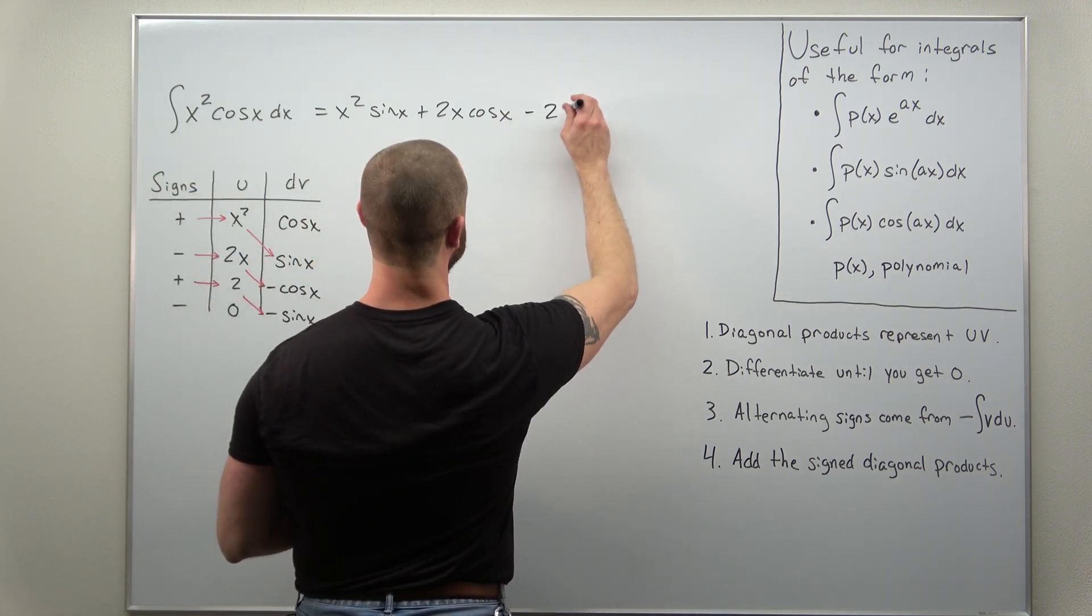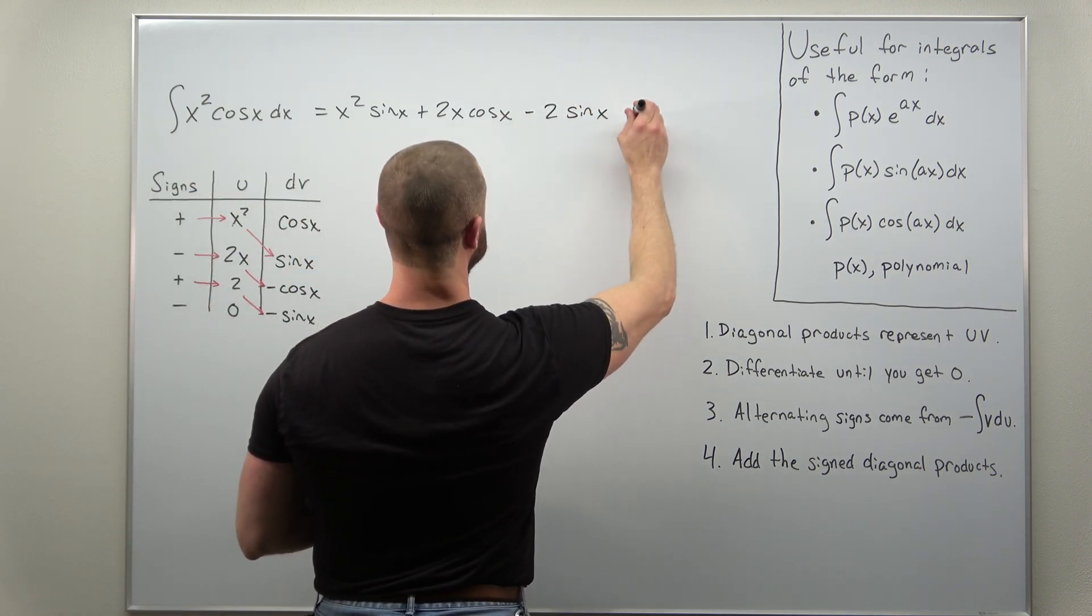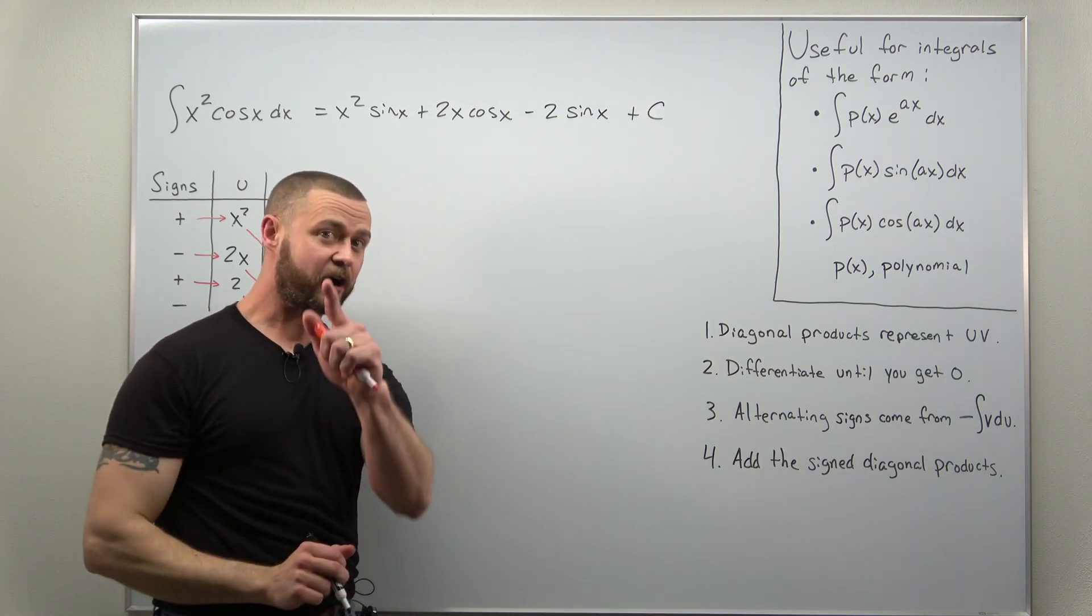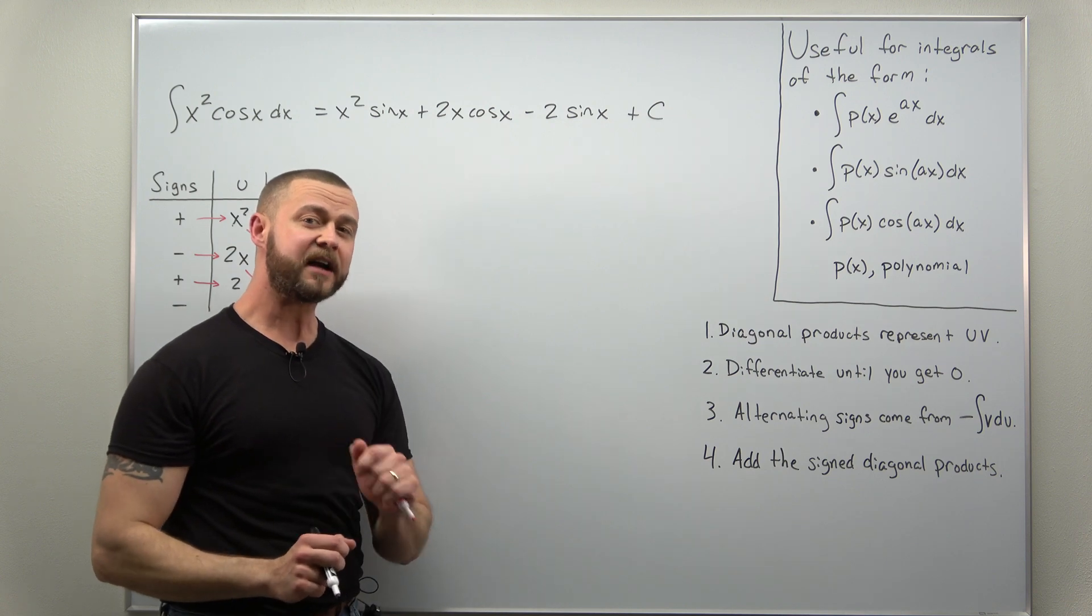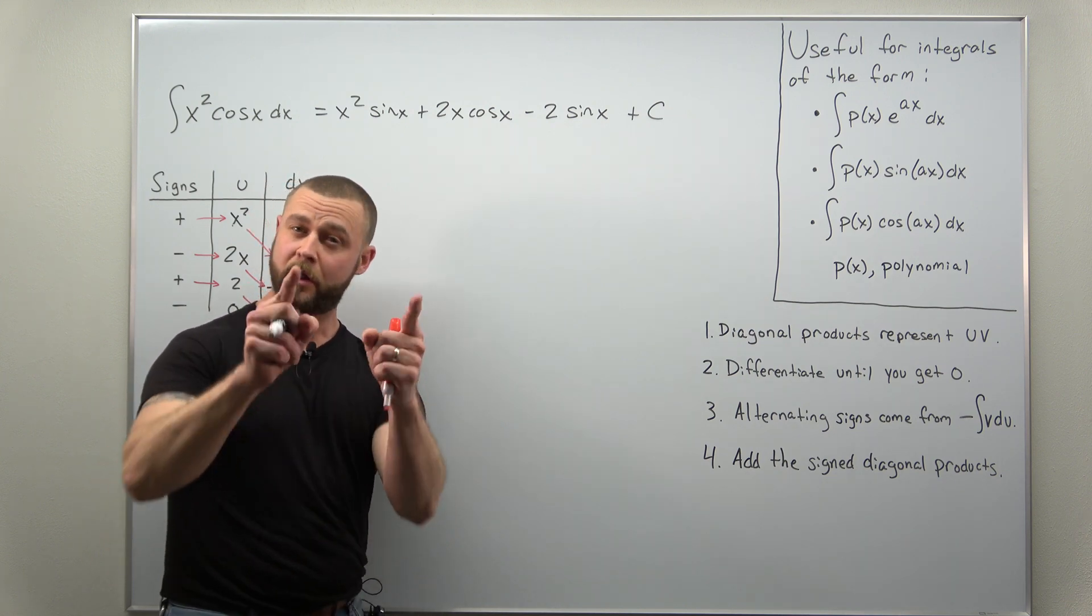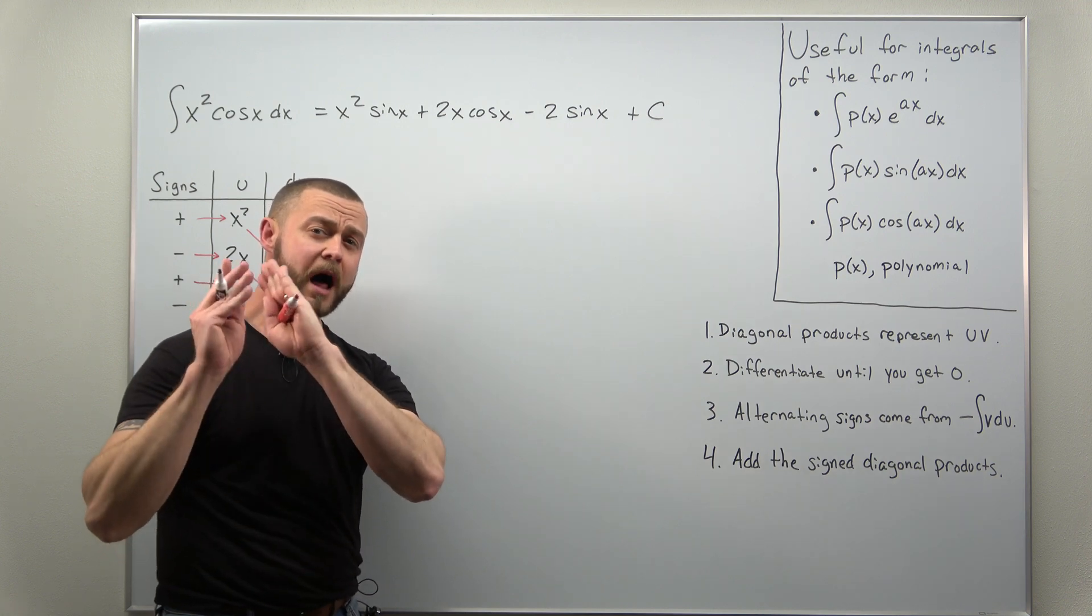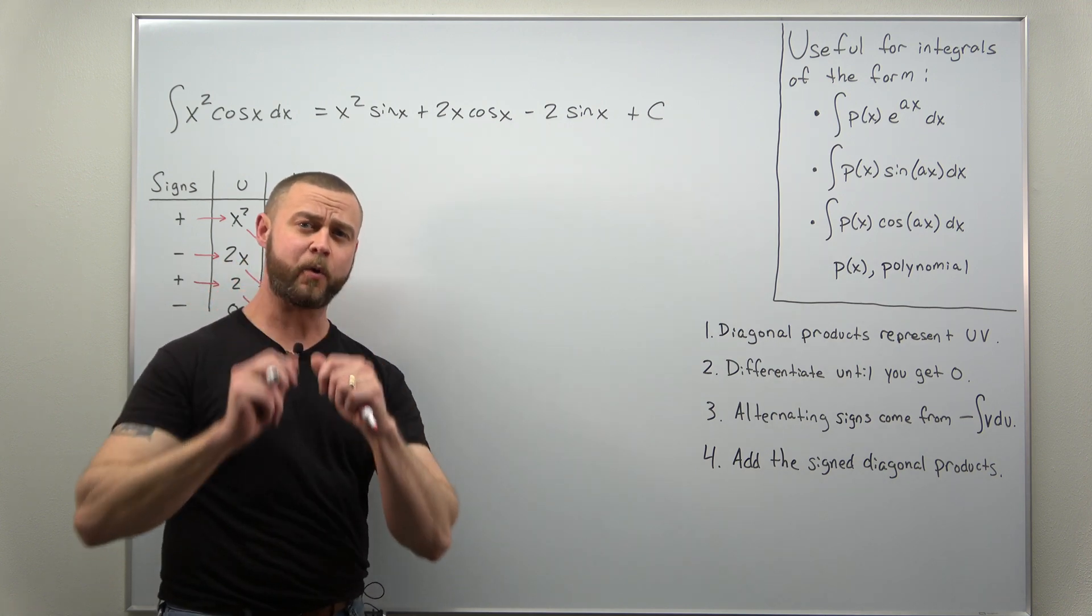So minus 2 sine of x and plus C. And there is our antiderivative for x squared times cosine of x in seconds. With the tabular method, you can crush a lot of integrals very quickly.